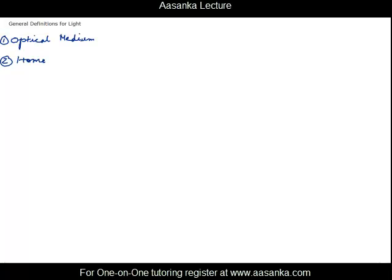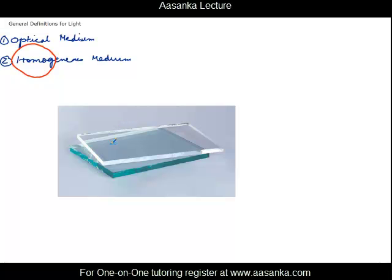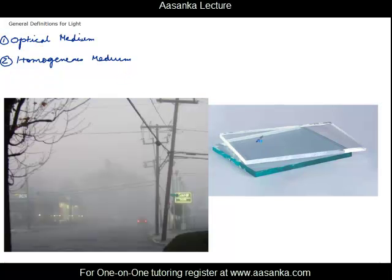The second term is homogeneous medium. 'Homo' means same, so when the medium is the same all throughout, you call it a homogeneous medium. For example, a glass slab appears to be the same all throughout, so it's a homogeneous medium. In contrast, fog is distributed differently in different parts, so it is called a heterogeneous medium.